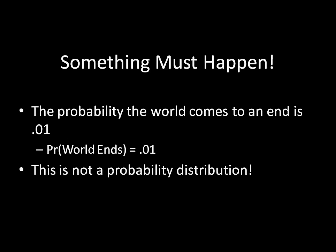So what does all this mean? Well, for starters, the first rule implies that something must happen. Suppose the probability the world comes to an end in 2012 is .01. And you can see a bit more formal notation of that on the screen. This isn't a valid probability distribution by itself. We only know what happens 1% of the time, and in order for this to be a valid probability distribution, we must define what's going to happen the other 99% of the time.